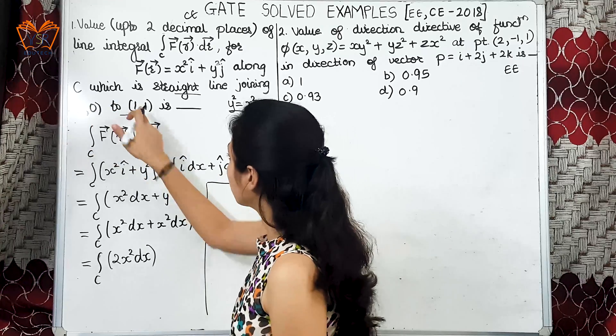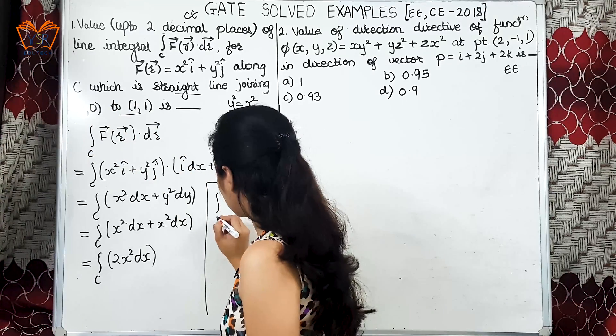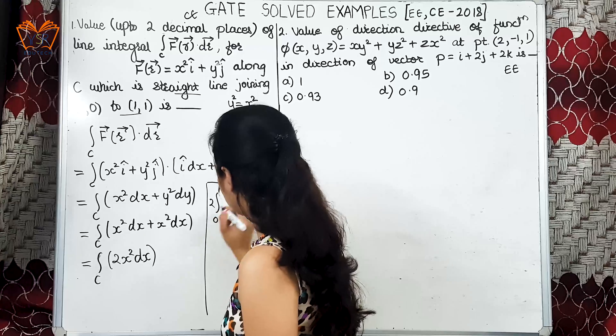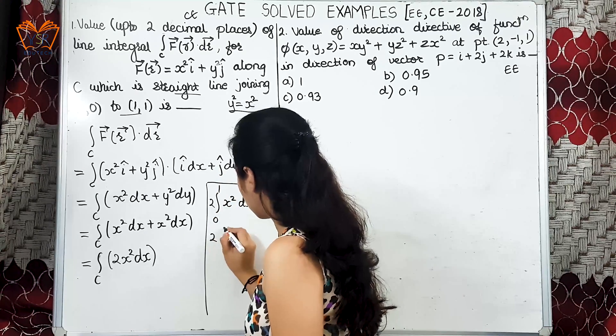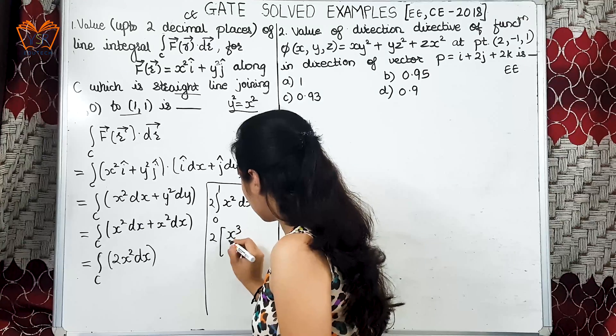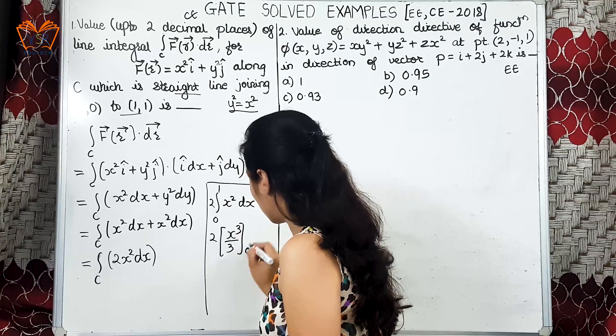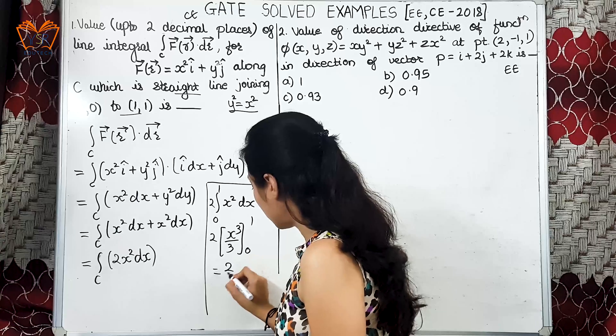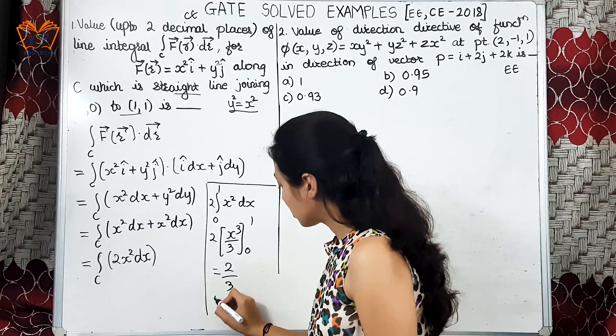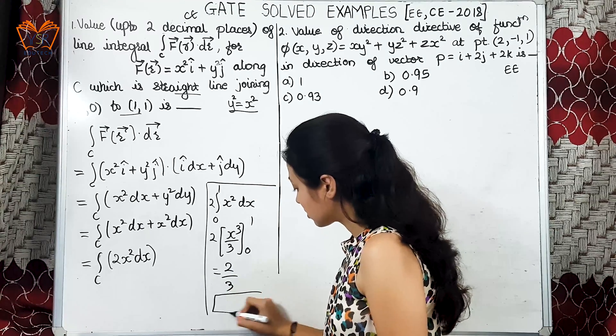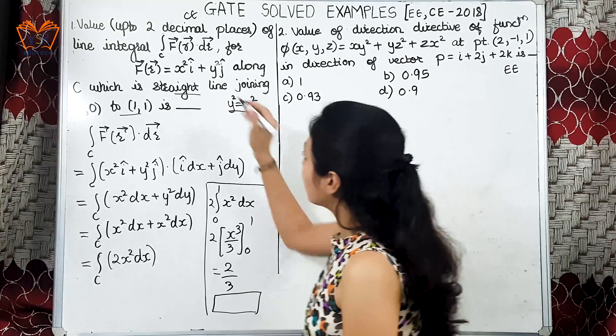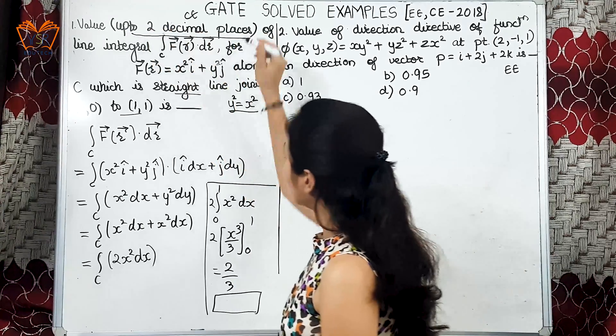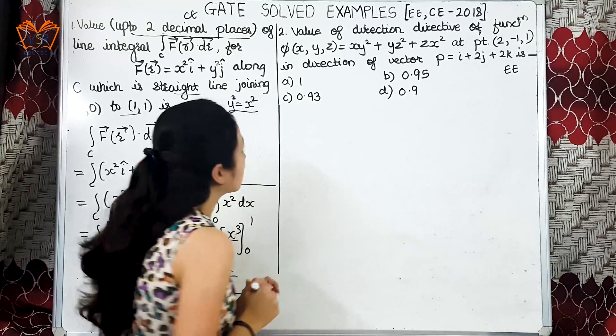If we find the integration, we get x square dx. Now the limits given to us are 0 to 1, so x square dx. This will be x cube divided by 3, limits are 0 to 1. This will be 2 by... You can divide this and find the answer. Calculate and let me know in the comment box. Make sure your answer is up to 2 decimal places.